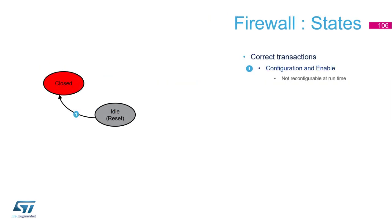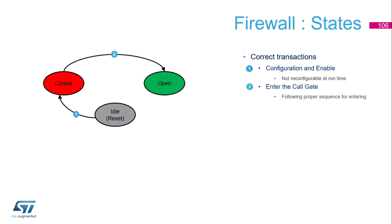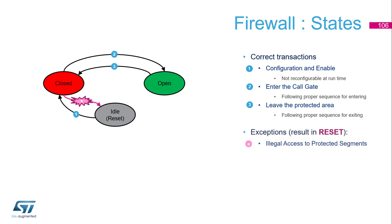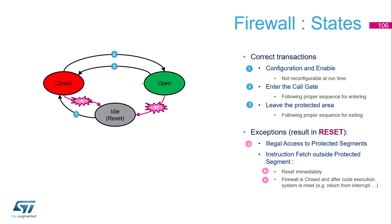Reviewing the different states: first you are in idle. You configure and enable the firewall — note it is not reconfigurable at runtime, meaning you can configure it only once and must wait until the next reset to reconfigure. After enabling, the firewall becomes closed, protecting the segments. Then you enter via the call gate following the proper entry sequence, and the firewall is open. Once execution is finished, you leave the protected area following the proper exit sequence. If the firewall is closed and you try to access a protected segment, you get a reset back to idle. If the firewall is open and you try to fetch instructions outside the protected segment, you get an immediate reset — or depending on the pre-arm bit, it will first close before a potential reset.